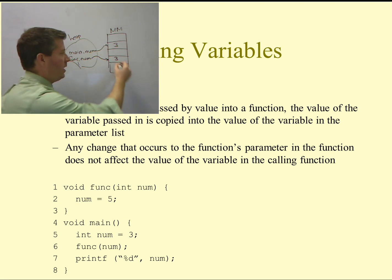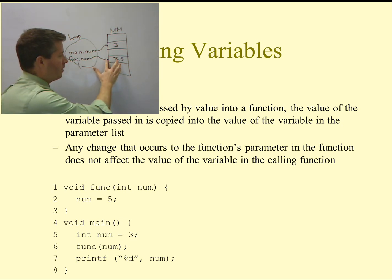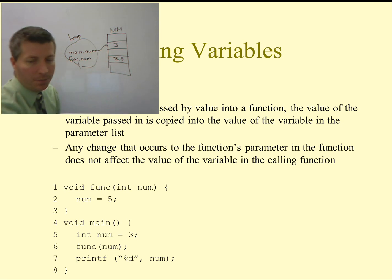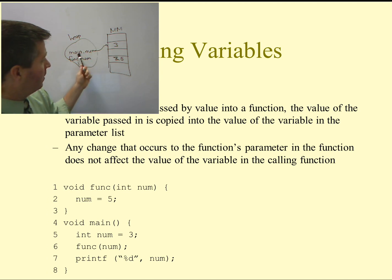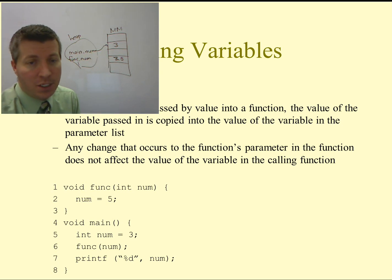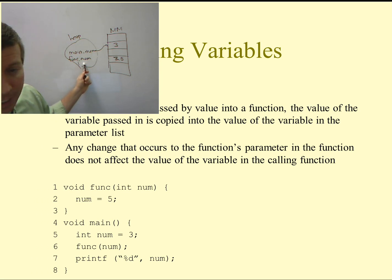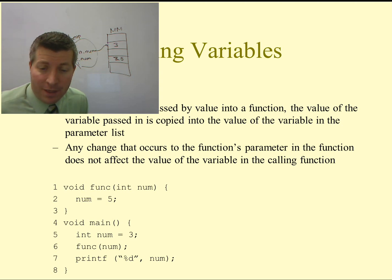Then on line 2, when I change the value of that variable to be a 5, it changes this one. On line 3, the function terminates, so I lose my reference into main memory. I come back to the main function and on line 7, it prints out the value of num — the one from the main function — and it prints out the value of 3. So even though I changed the value of the num variable inside of the function func, that variable was the one defined in that function, not the one in the main function. So when you pass a variable by value, the change does not get reflected in the function from which it was called.